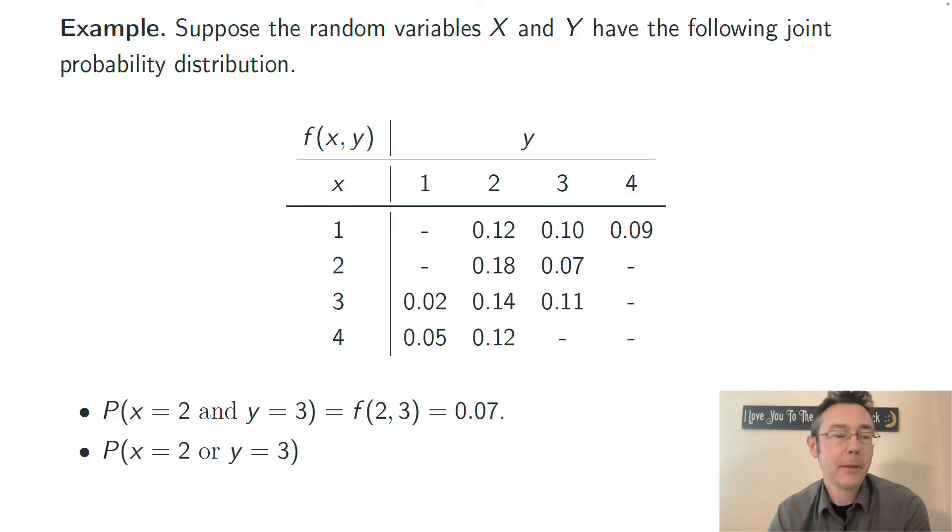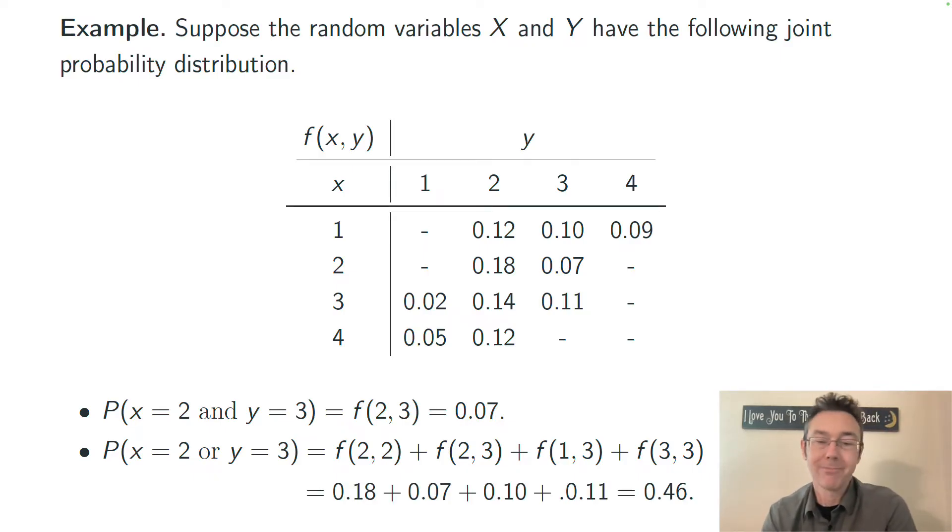Slightly more complicated example, the probability that x equals 2 or y equals 3. This event can happen in multiple different ways. We're going to add up the probabilities from all the cells that satisfy this condition. When x is 2, we have two different possibilities. When y is 3, we have three different possibilities, but there's one that overlaps. We plug in all those values, add them all up, and we get 0.46, a 46% chance of that event.